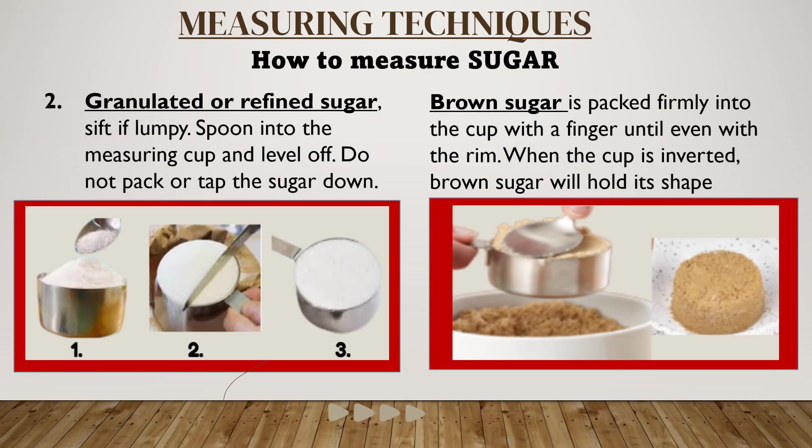How to measure sugar: for granulated or refined sugar, sift if lumpy, spoon into the measuring cup, and level off. Do not pack or tap the sugar down. For brown sugar, remove or mash any lumps, then pack firmly into the cup with a finger until even with the rim. When the cup is inverted, brown sugar will hold its shape.